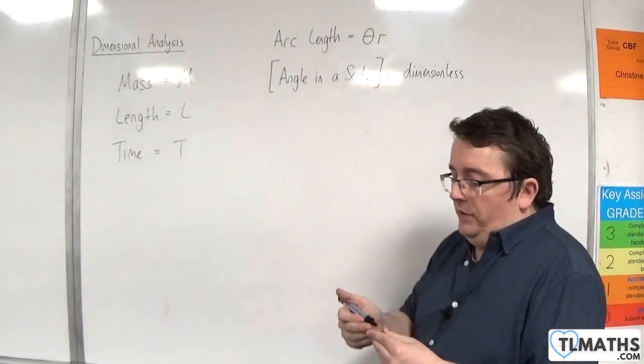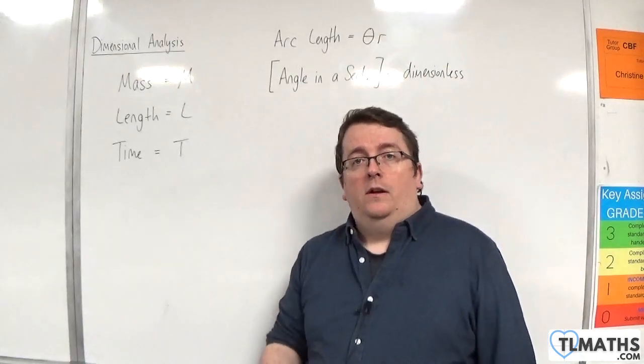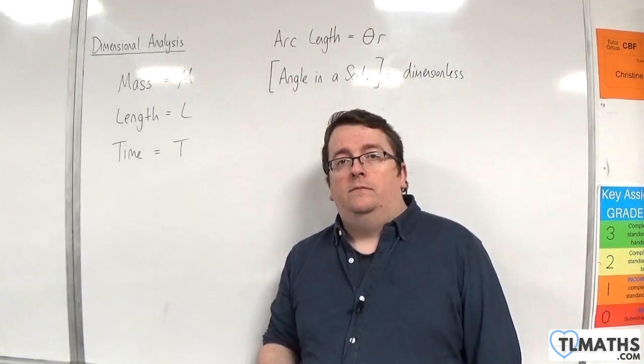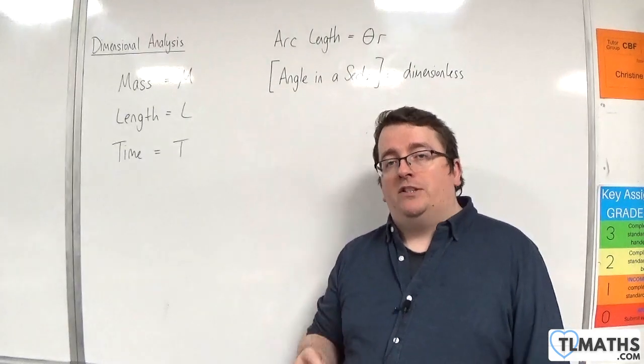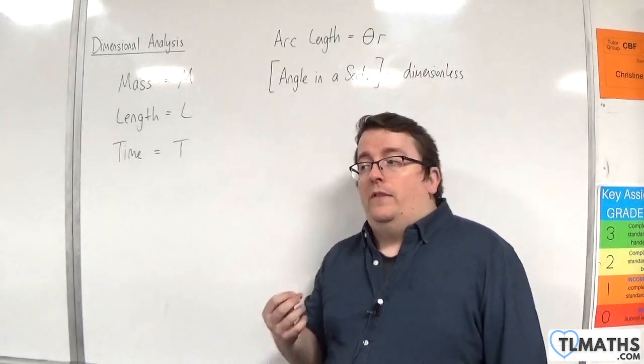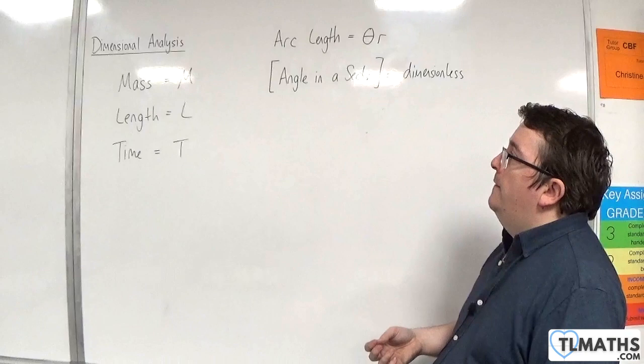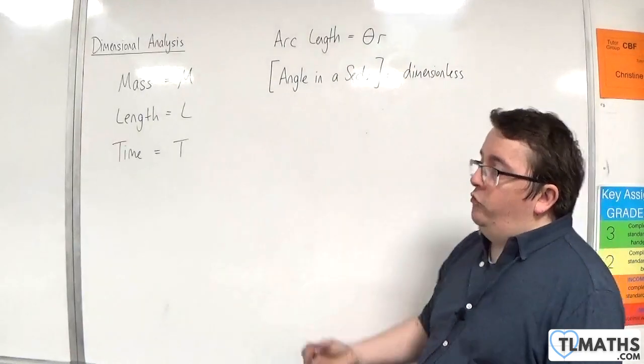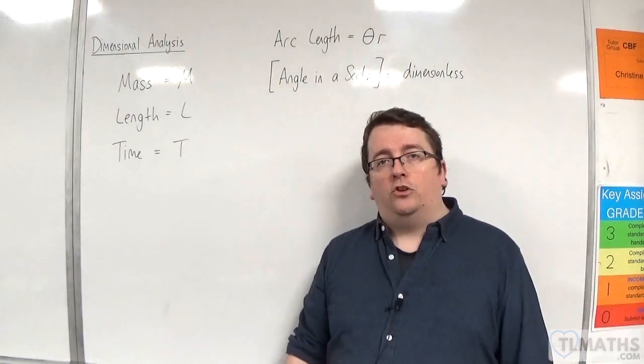We've had the coefficient of friction, mu. That's a dimensionless quantity. And we've had the coefficient of restitution, e. That's also dimensionless. So you will come across dimensionless quantities when we're working through this section.